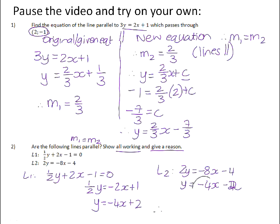So therefore, if we have a look, that gradient and that gradient are the same. So therefore, line 1 is parallel to line 2, and the reason is because the gradient of line 1 is equal to the gradient of line 2.